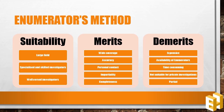The demerits are: first, due to the involvement of trained investigators, this method is considered to be expensive; second, unavailability of efficient enumerators may harm the accuracy of information; third, the training provided to enumerators makes the method time consuming; fourth, as the method is expensive, it is not suitable for private investigations; and lastly, if the enumerators are biased, the data may not be accurate.